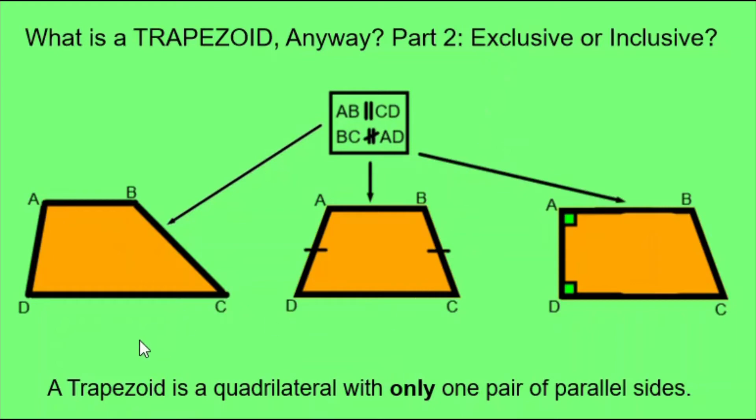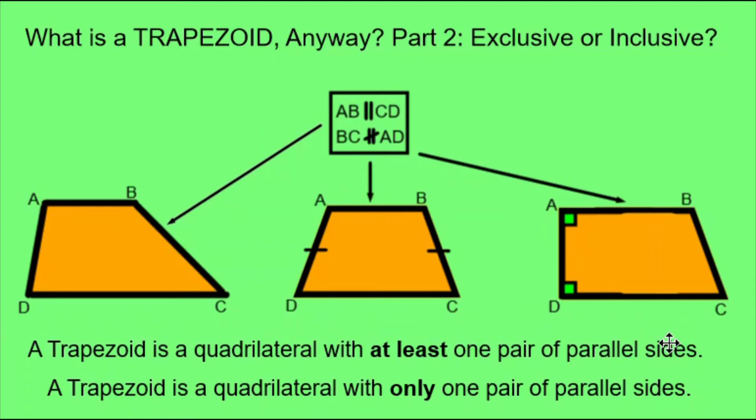Exclusive means that certain shapes are being excluded by the definition. We also have the inclusive definition which looks quite similar. A trapezoid is a quadrilateral with at least one pair of parallel sides.